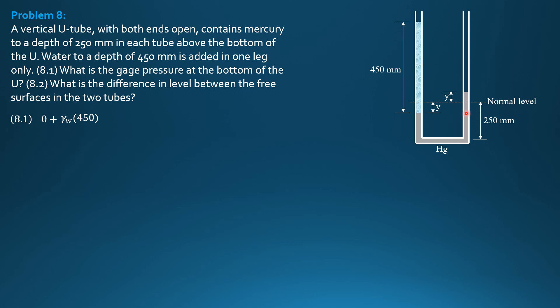minus specific weight of mercury times 2Y, and specific weight of mercury is specific gravity of mercury, 13.6, times specific weight of water, times 2Y, then equals pressure here, which is 0. So minus 13.6, times specific weight of water, times 2Y, equals 0.